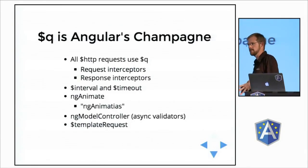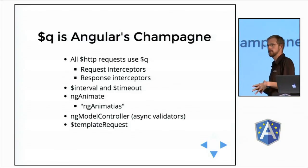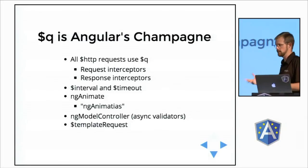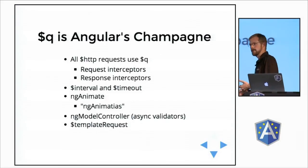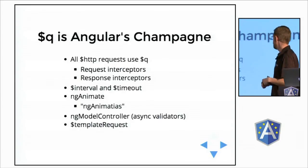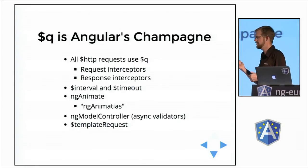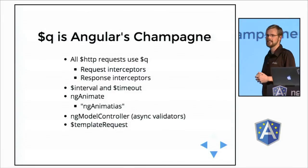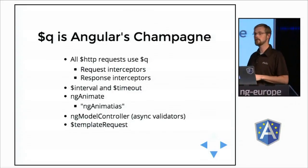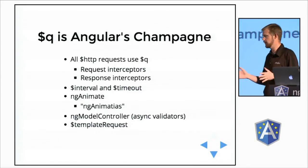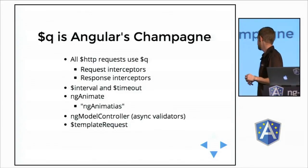Q really is Angular's champagne. In version 1.2, only a couple of items were using promises internally in Angular via the Q service — those were the HTTP service and the interval and timeout services. As of 1.3, ng-animate — or ng-animatius as I heard today — and ng-model-controller also use it, which allows you to do asynchronous form validation. The template request service also uses it.